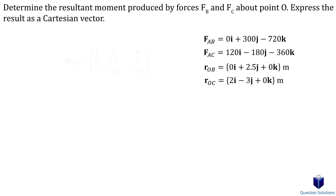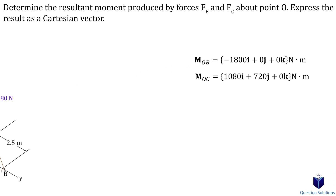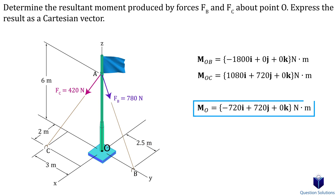Now we take the cross product for each force. Since we are looking for the resultant moment, all we need to do is add these values together. When we add, we add the i components to i components, j components to j components, and k components to k components — that is our answer. If you did a position vector from O to A, it'll be simpler since you don't need two position vectors. But I wanted to show that you can take the moment from O to where the force is ending, which were points B and C. That should cover the types of problems you will face with finding moments. I hope this video helped — thanks for watching, and best of luck with your studies.